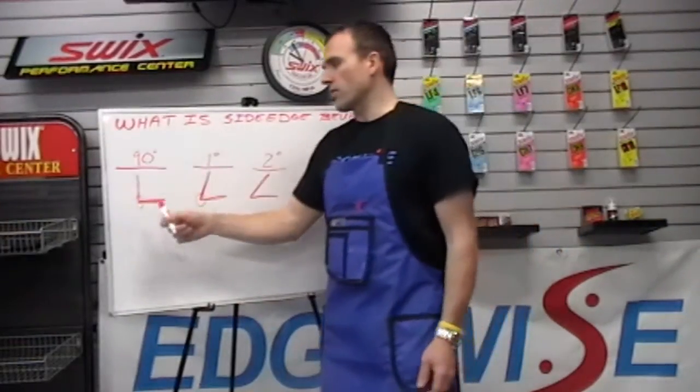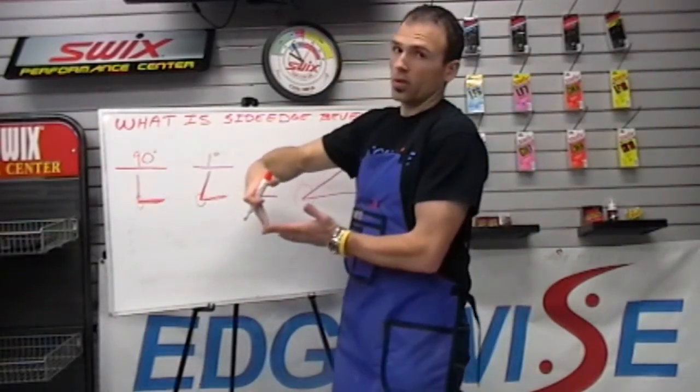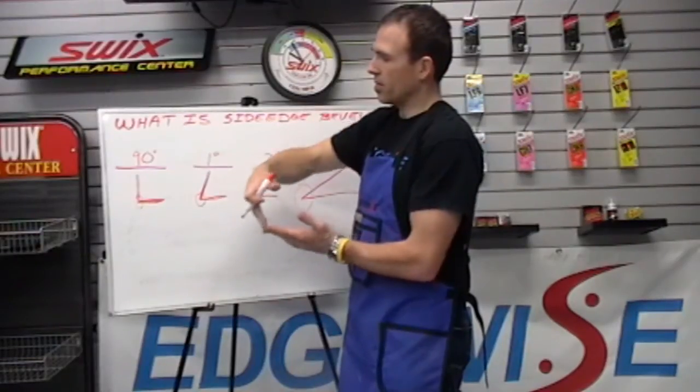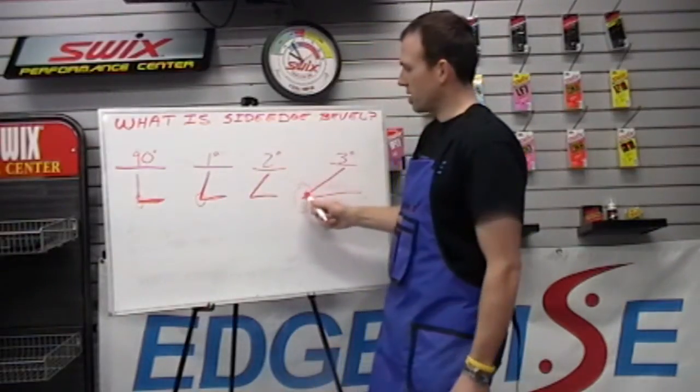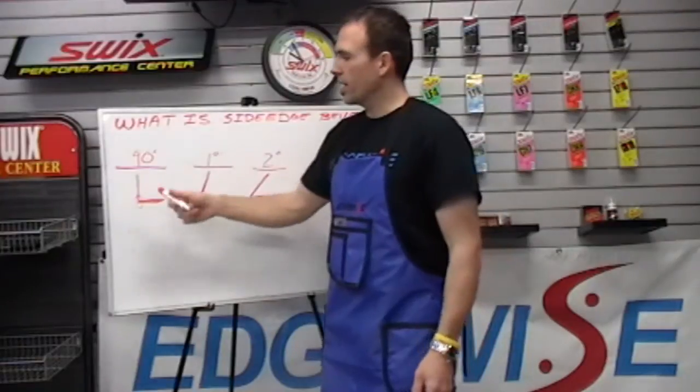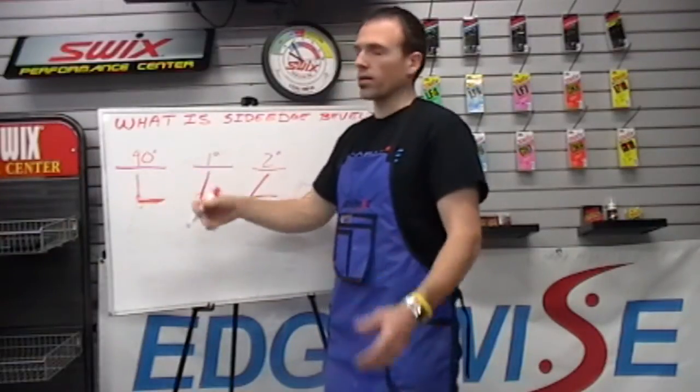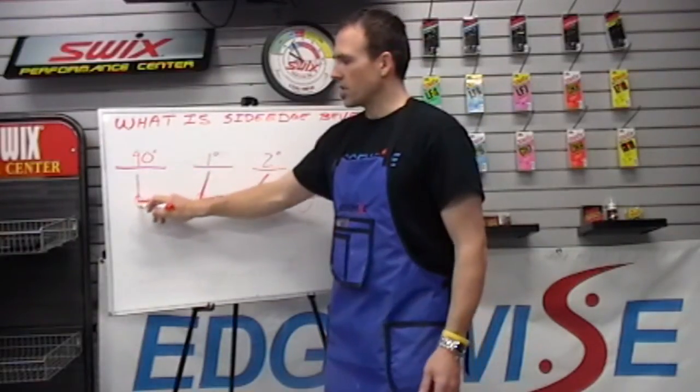The benefit of a 90 degree is that it's more durable. The edge angle is not as acute, so it stays sharper for longer. And if you hit a rock or anything like that, the damage is less severe.